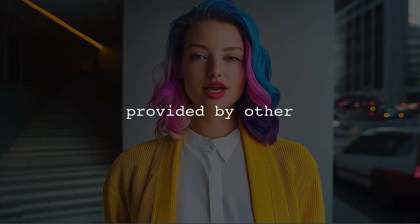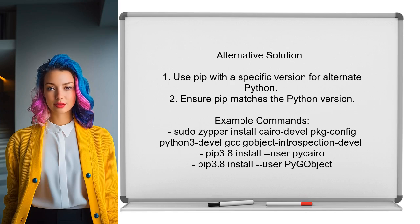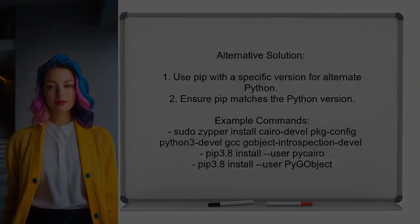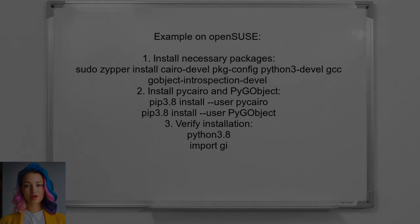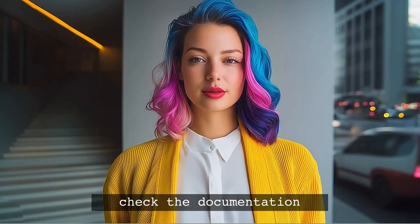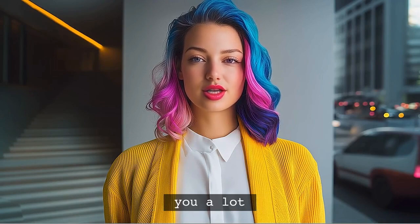Now let's look at the answers provided by other users. An alternative solution suggests using pip with a specific version to install the GI package for different Python versions — the pip version must match the Python version you are using. For example, on OpenSUSE, if the standard Python version is 3.6 and an alternate version is 3.8, you would use pip3.8 to install PyCyro and PyGobject. Always check the documentation for the package you are installing; it can save you a lot of headaches down the line.